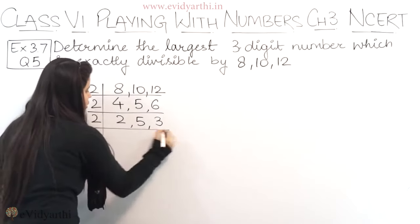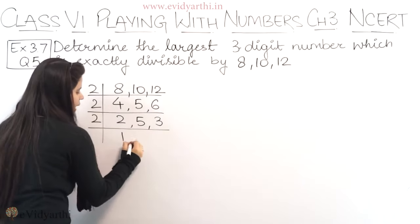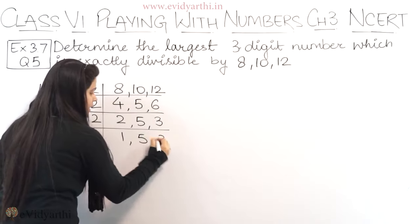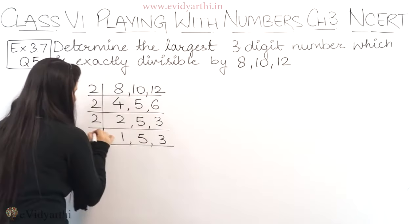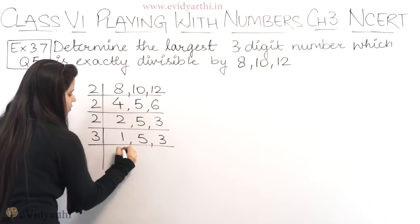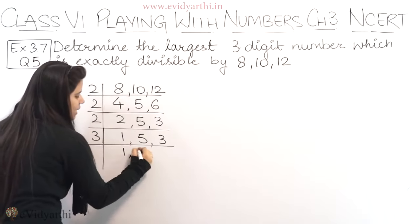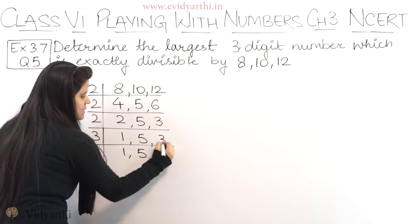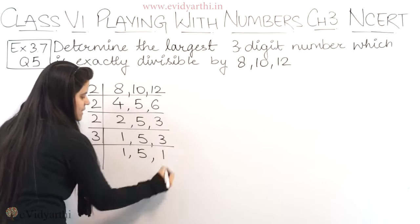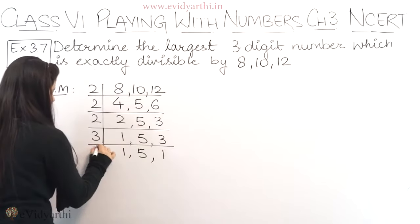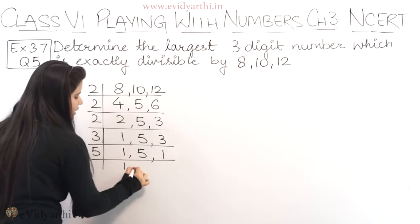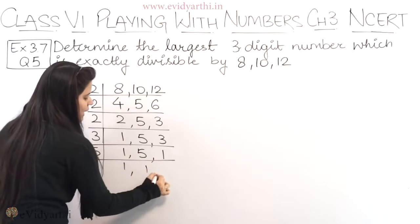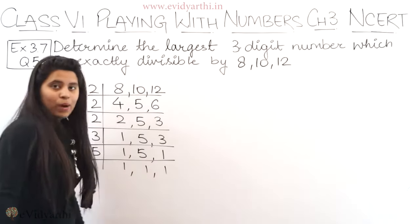Again dividing by 2, we will get 1, 5 and 3. Now we need to divide by 3, which gives us 1, 5 as it is, and 3 divided by 3 gives 1. Then dividing by 5, this gives me 1, 1 and 1.